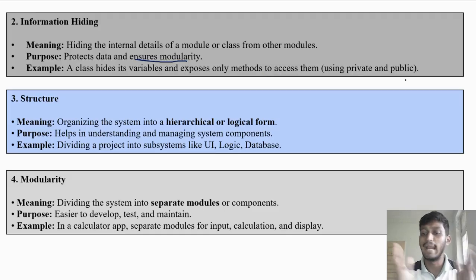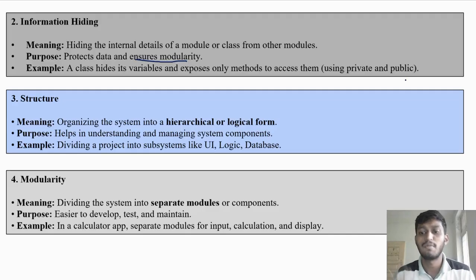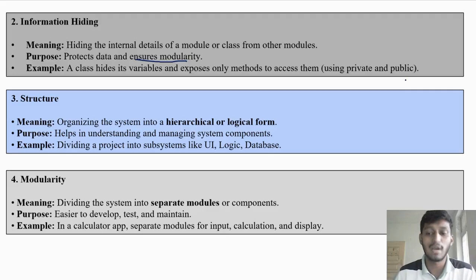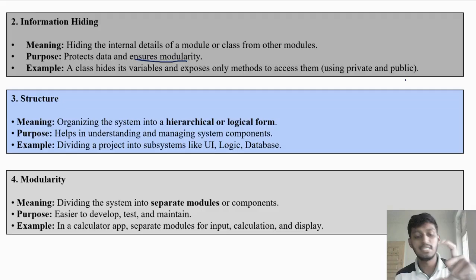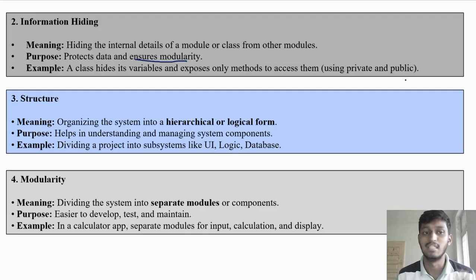All variables are hidden, and all methods can be shown using public or private. Protected means only the extended (child) class can use them. Private means access is only within that same class. Public means anyone within the program can access it.